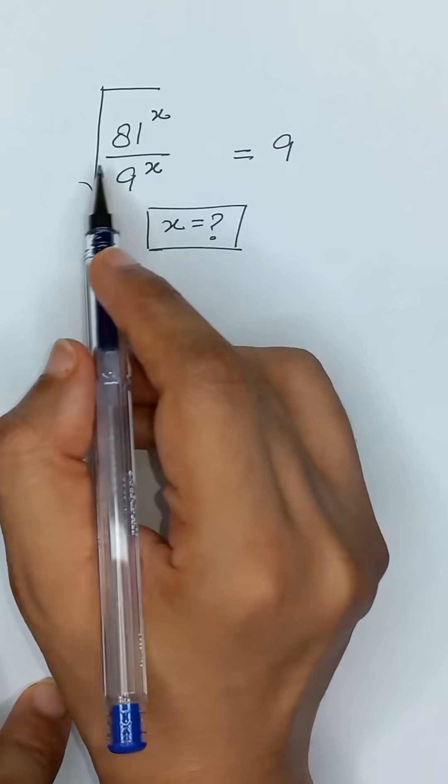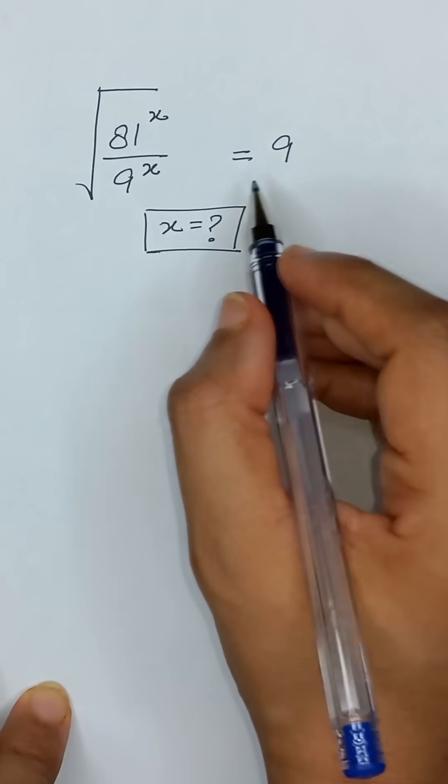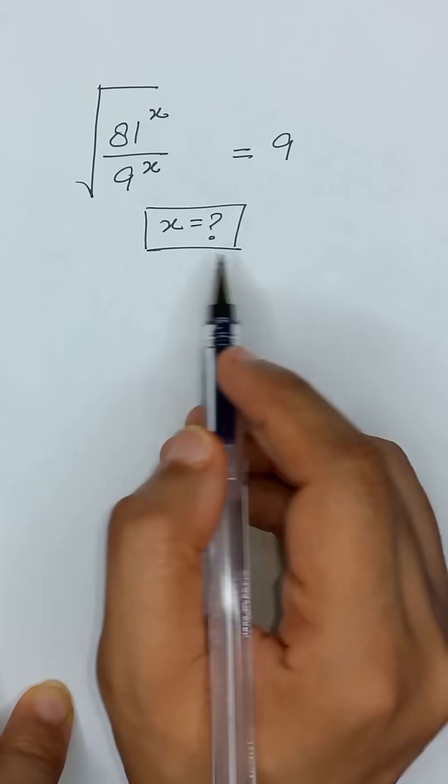Square root of 81 to the power x divided by 9 to the power x is equal to 9, and we will solve for x.